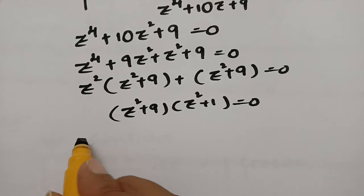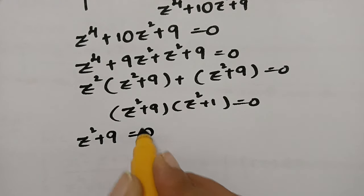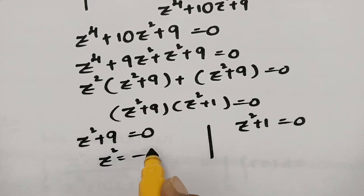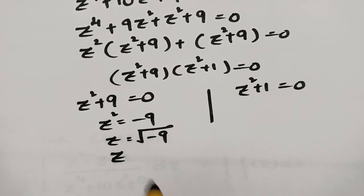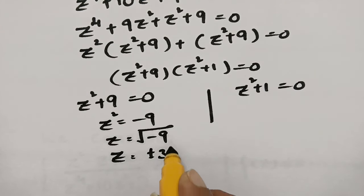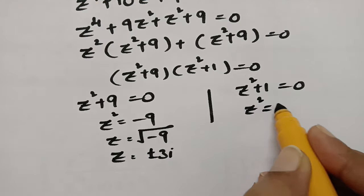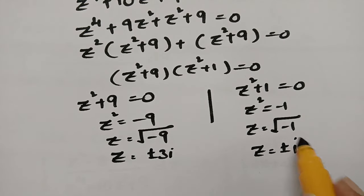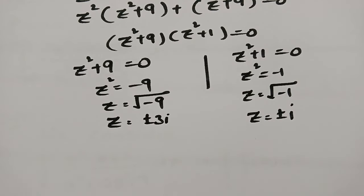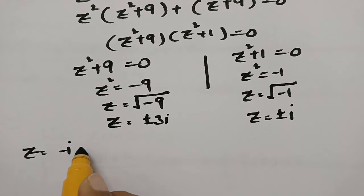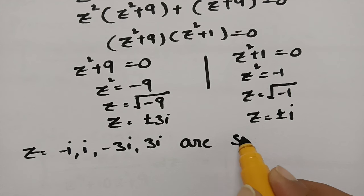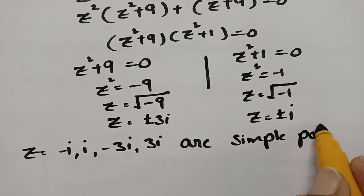Setting each factor to zero: z² + 9 = 0 gives z² = -9, so z = ±3i. And z² + 1 = 0 gives z² = -1, so z = ±i. Therefore there are four simple poles: z = -i, +i, -3i, and +3i.